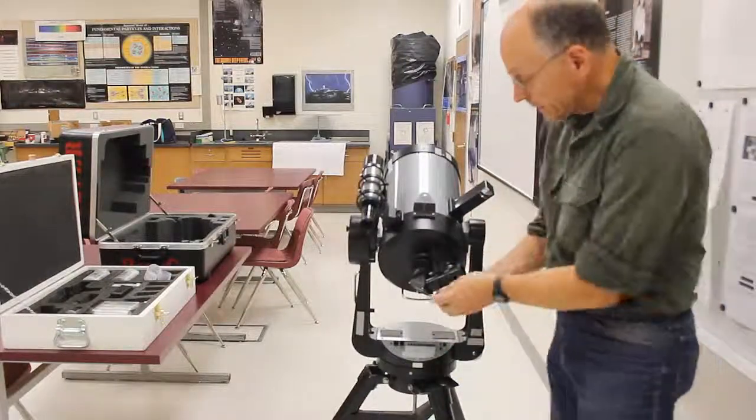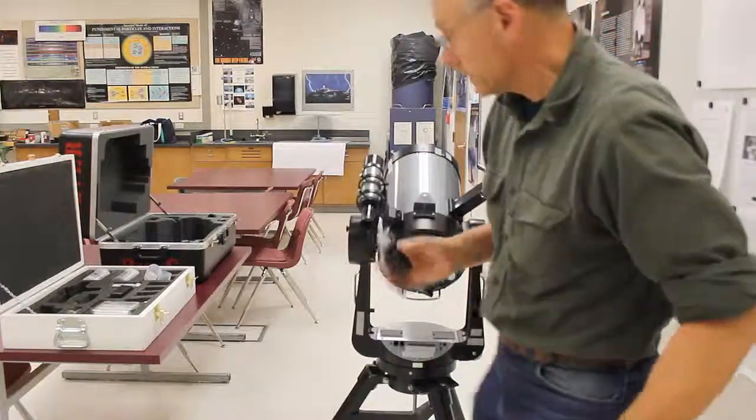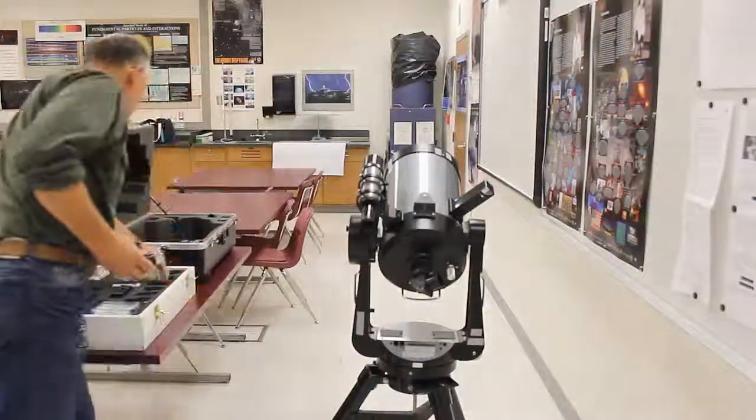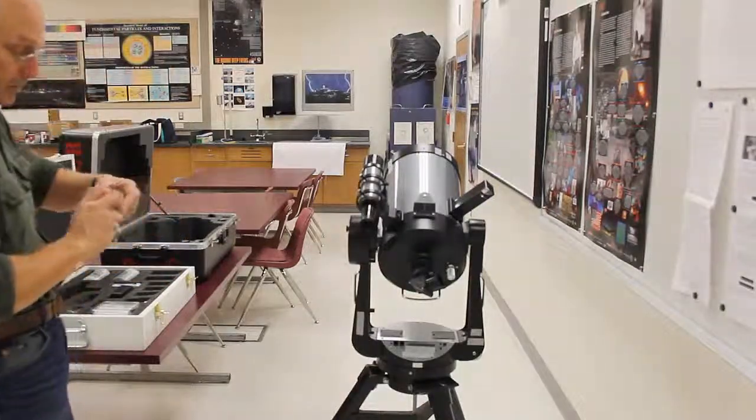For disassembling it, I'd start by taking the eyepiece off, gently loosen the thumb screws just a little bit and this will come right out. Pop that into its case, close up the case.